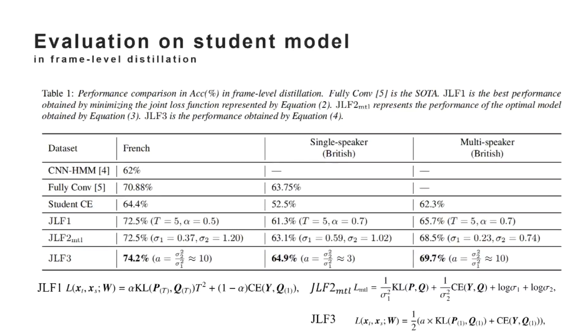This is the performance comparison in frame-level distillation. Follycom is the state-of-the-art. The JLF-1-2-3 represents the three joint loss functions. We can find out that the JLF-3 proposed in this paper got better performance than the traditional method JLF-1. It proves the effectiveness of knowledge distillation in cued speech recognition and the importance of joint loss function based on multi-task learning and balance coefficient.